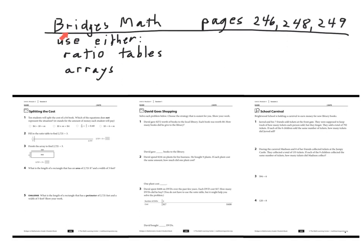All right, so today for math we're going to work in our Bridges Math books for fourth grade and we're going to do these pages 246, 248, and 249. I would like you to use these—we're basically doing division here and I want you to use the two new methods we've learned of ratio tables or arrays.